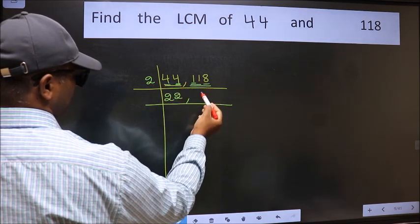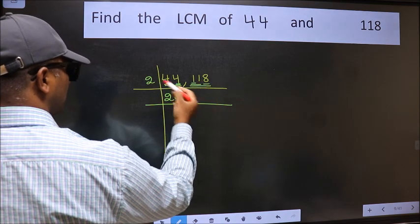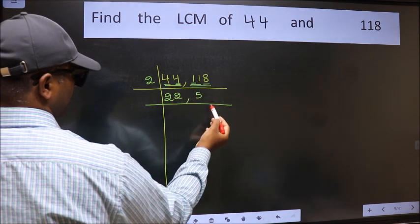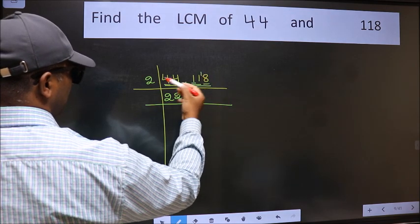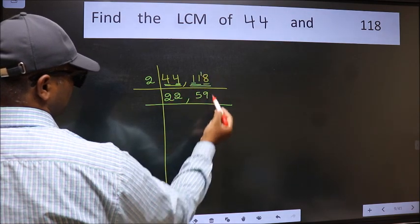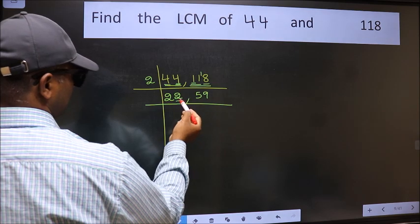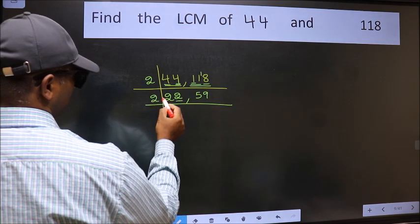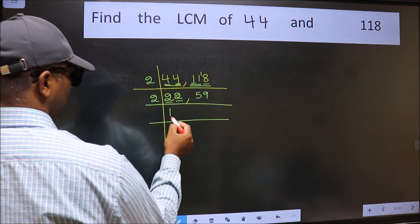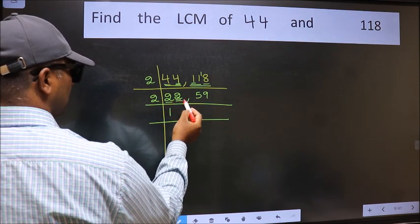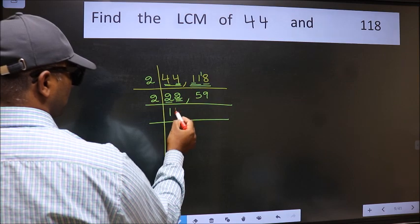The number close to 11 in the 2 table is 2 times 5, which is 10, leaving 11. Last digit is 2, which is even, so take 2. When do we get 2 in the 2 table? 2 times 1 is 2 for both numbers.